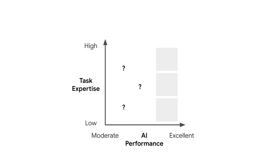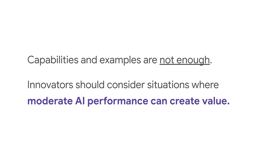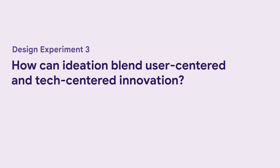We think of the task expertise / AI performance matrix as AI's opportunity space. When ideating, students seemed to focus on the right-hand side — where ideas require near-perfect model performance — as opposed to covering the entire space. We also noticed that following a user-centered approach, that is identifying pain points before considering what AI can do, unintentionally limited ideation toward the upper right corner where there is high uncertainty. So from design experiment two, we learned that capabilities and examples alone are not enough — innovators should also consider situations where moderate AI performance can create value. This made us realize we needed a new design process for AI, one that blends user-centered and tech-centered approaches such as matchmaking.